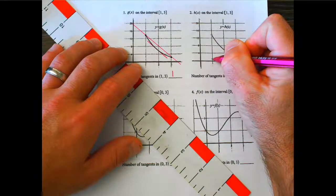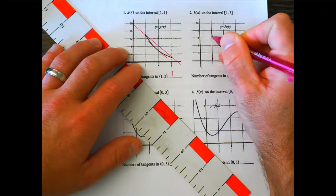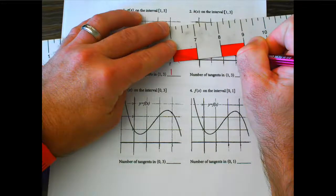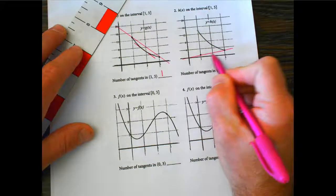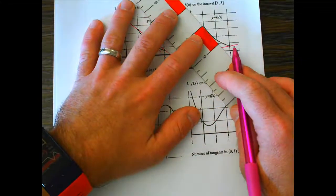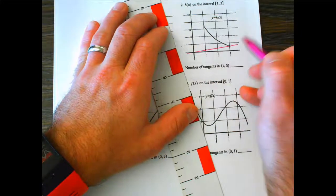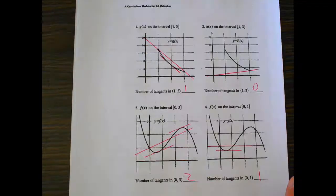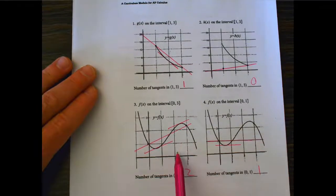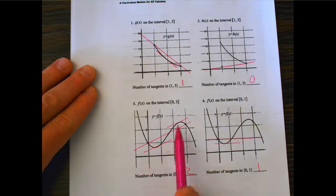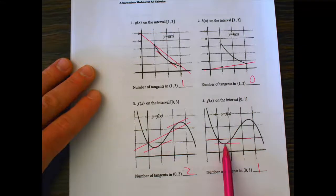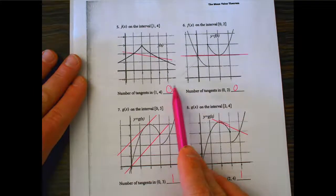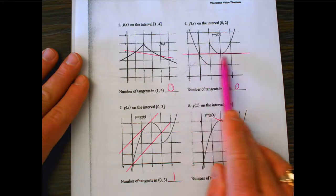On number two, I have a closed dot at one endpoint and an open dot at the other. Since I'm connecting one to three, I go closed dot to closed dot. All the tangents over there have negative slopes, whereas the secant has a positive slope — so that's an example of zero parallel tangents. On number three I got two, on number four I got one.